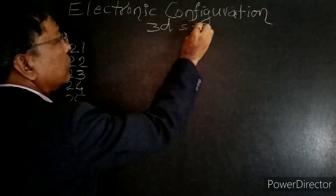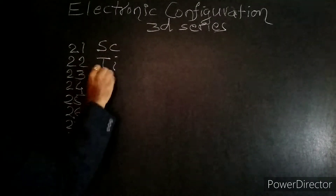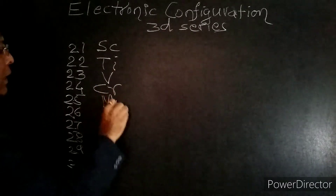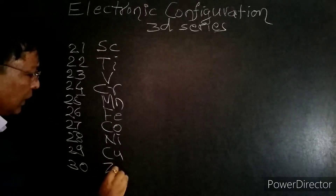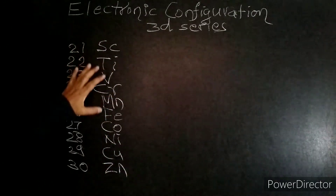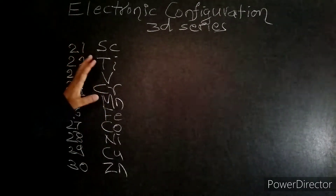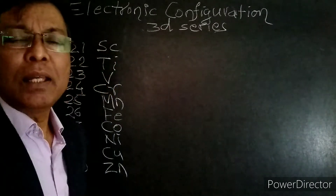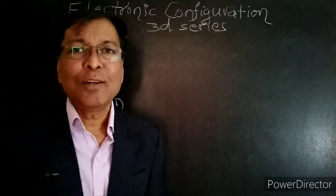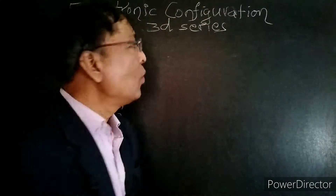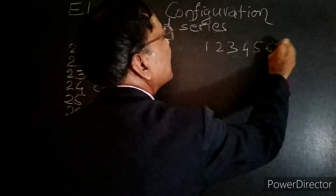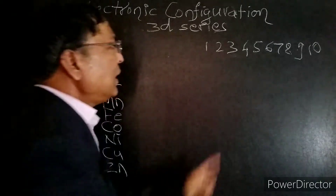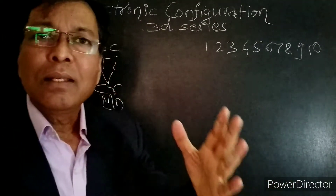The 3D series elements are: Scandium, Titanium, Vanadium, Chromium, Manganese, Iron, Cobalt, Nickel, Copper, and Zinc. The numbers 1 to 10 represent the number of D-subshell electrons for each element in the 3D series.